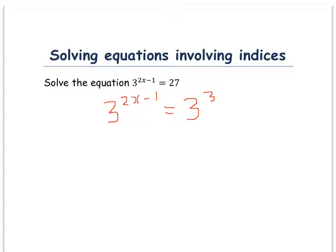Now, because both sides contain the common 3, we need to solve basically the powers. So we're going to solve 2x minus 1 is equal to 3. So this difficult looking question comes down to something quite simple to solve.